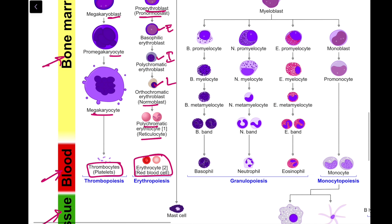Next is the mast cell, which arises from the myeloid series. The mast cell is very similar both in appearance and function to the basophil, another type of WBC. Mast cells were once thought to be tissue resident basophils, but it has now been shown that the two cells develop from different hematopoietic lineages and thus cannot be the same cells.